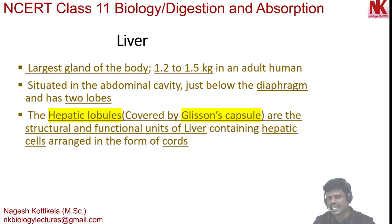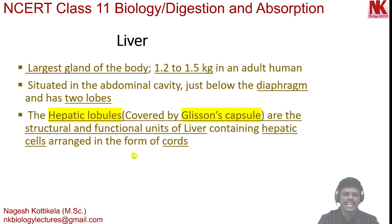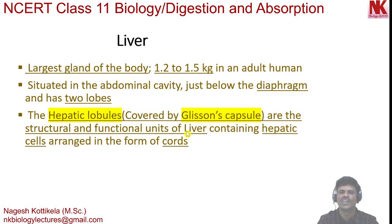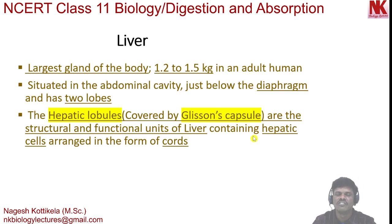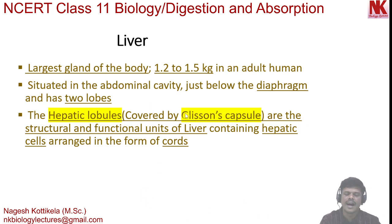The liver has two lobes: the left lobe and the right lobe. Inside the lobes of the liver, hepatic lobules are present. The hepatic lobules are the structural and functional units of the liver — a very important concept. These hepatic lobules contain hepatic cells arranged in the form of linear cords, with a network of capillaries and a central vein in between.